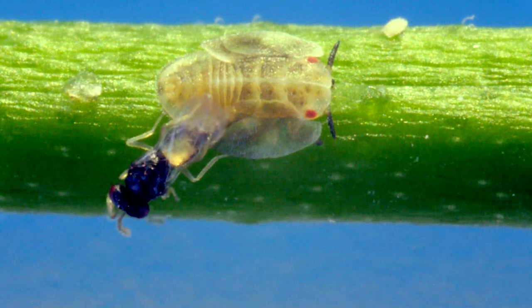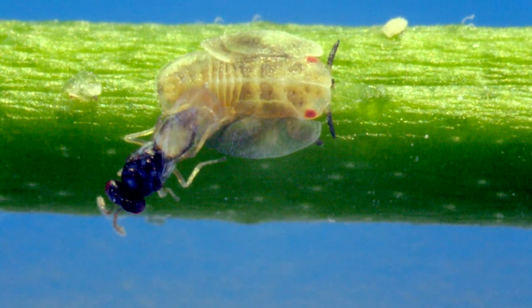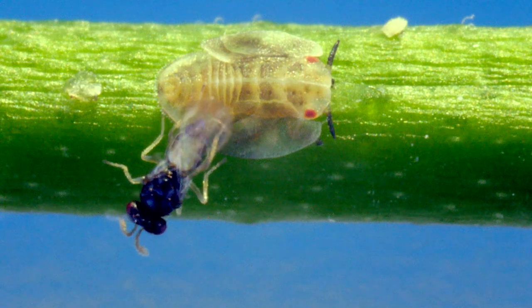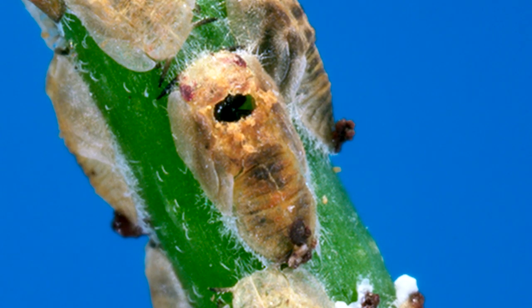The parasitizing process involves the tamarixia depositing one egg between the thorax and abdomen of the psyllid nymph. The neonate tamarixia then proceeds to consume the body of the psyllid nymph, completing the development process under the psyllid nymph shell.